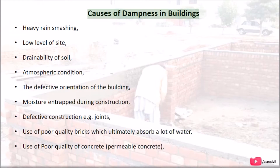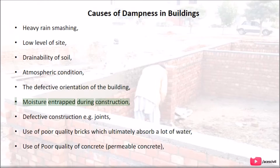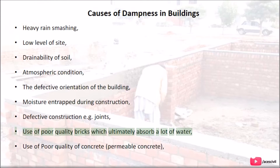Causes of dampness in buildings include: heavy rain, low site level, drainability of soil, atmospheric conditions, defective orientation of the building, moisture entrapped during construction, defective construction such as joints, use of poor quality bricks which absorb a lot of water, and use of poor quality or permeable concrete.